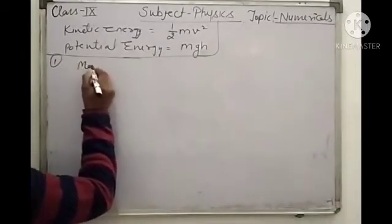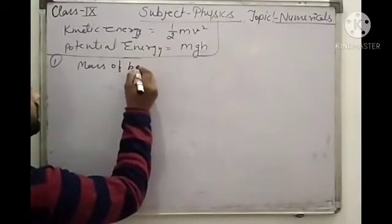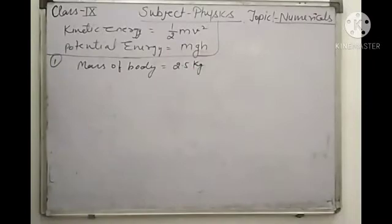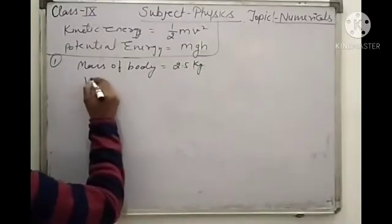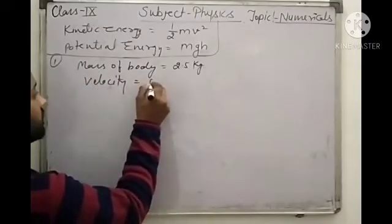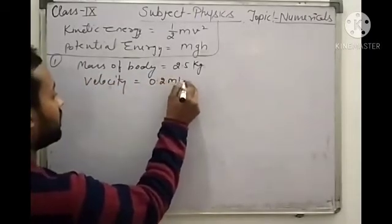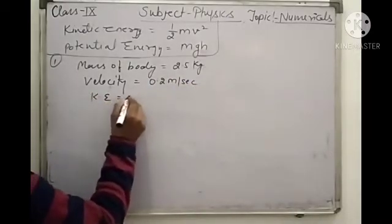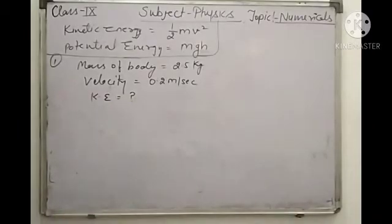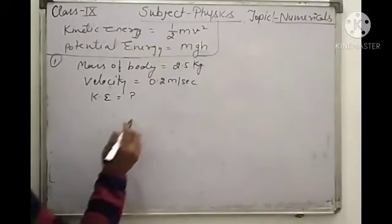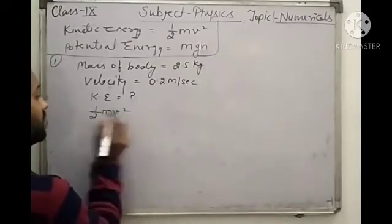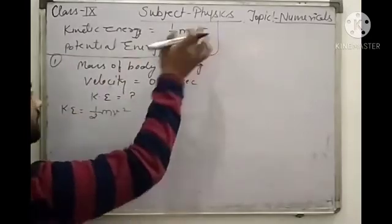So here, the mass of the body is 2.5 kg and the velocity of that body is 0.2 metres per second. What do we need to do? We need to find kinetic energy. Two things are given to us. The kinetic energy formula we need to apply is half mv squared. This is the formula of kinetic energy.